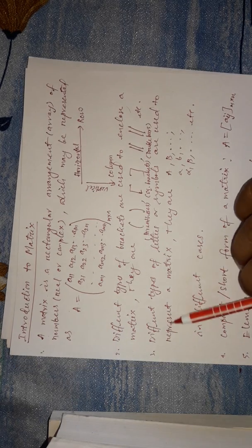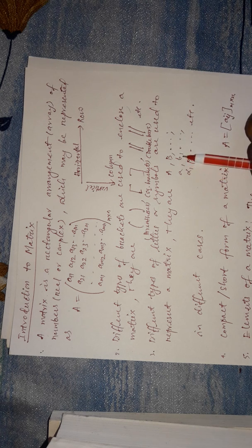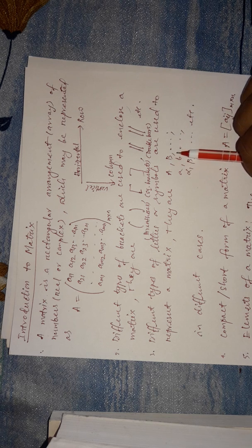What is the short form or symbol for a matrix? Different types of letters and symbols are used to represent a matrix. Generally we use capital English letters to represent a matrix. In special cases, small letters are also used to represent a matrix, and sometimes symbols are used as well — I will tell you in later classes where these short letters and symbols are used. But generally, capital letters are used to represent a matrix.